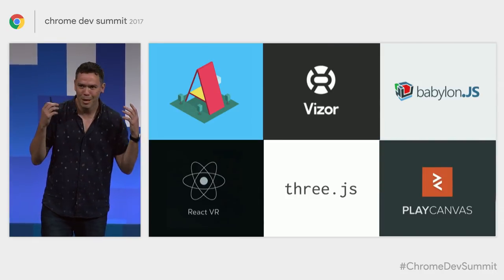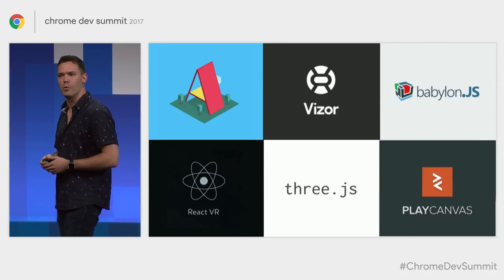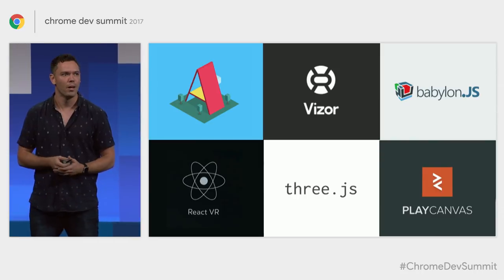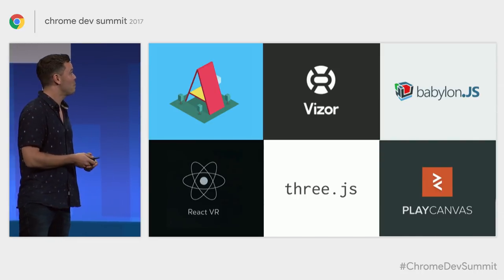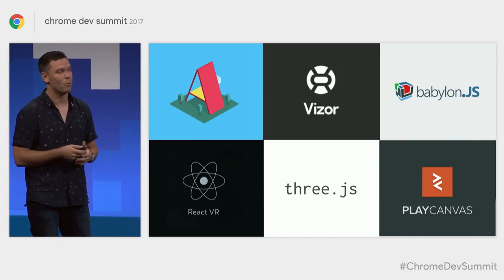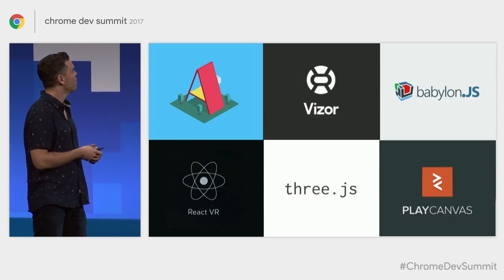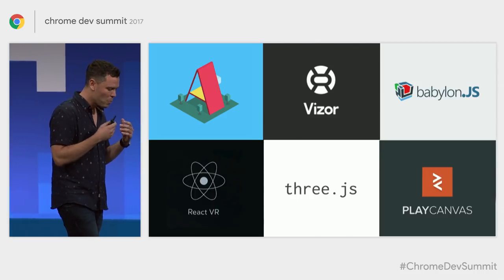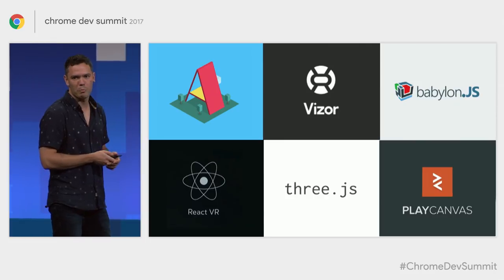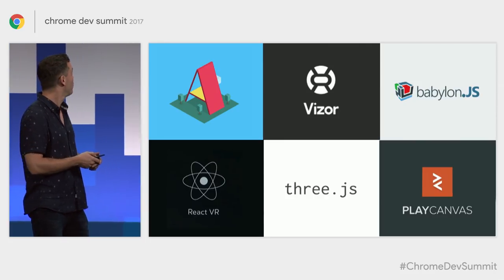We've seen in the last three and a half years all these new tools emerge — tools like A-Frame, Three.js, Babylon.js adding WebVR support, and then WYSIWYG tools such as Visor, PlayCanvas, Hologram. There's a whole new generation of tools making it fun to create virtual reality content on the web.